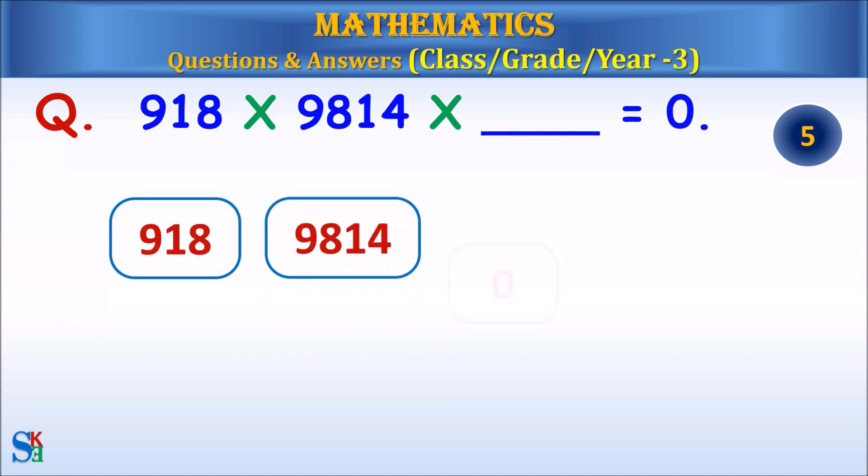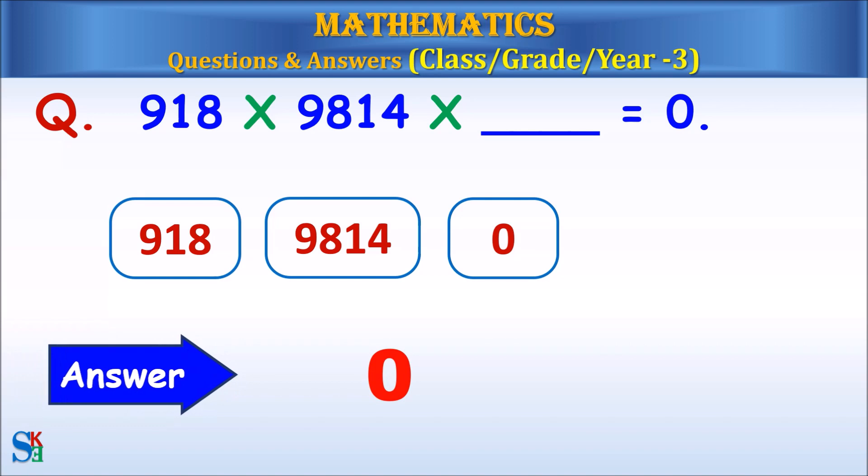918 times 9814 times what equals zero? Answer: zero.